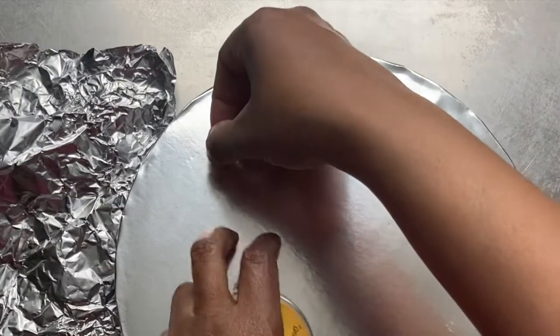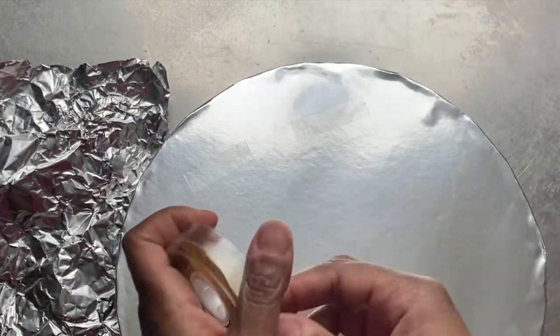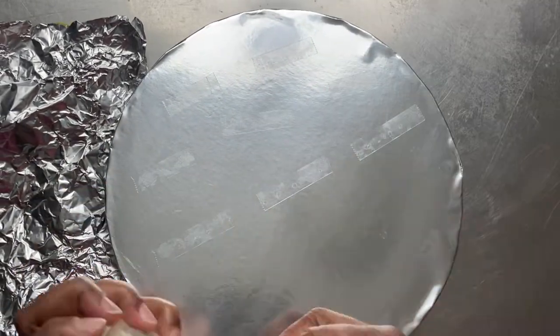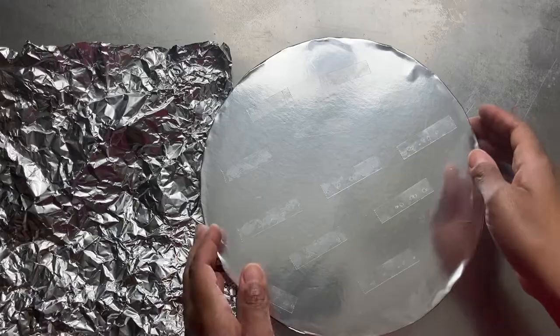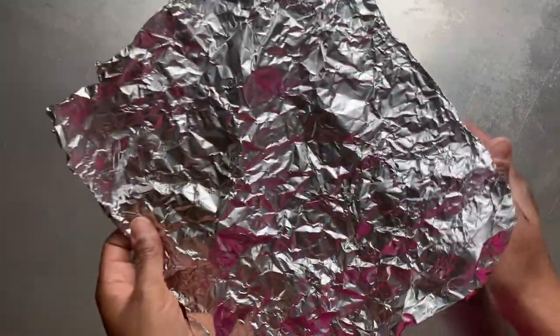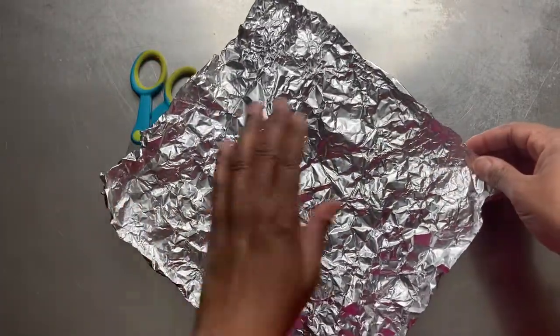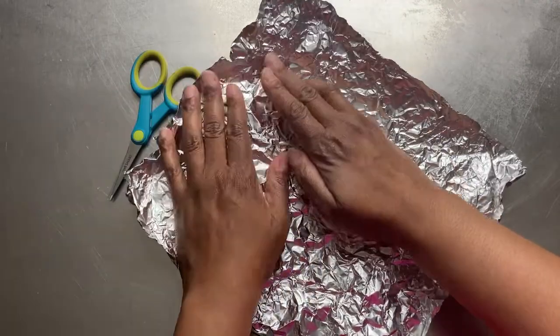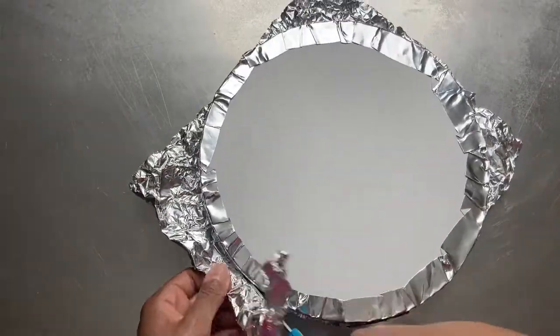Next, I apply double-sided tape to the top of the cake base. Then I gently press the aluminum foil to the top of my cake base. Flip it over and cut the excess aluminum foil from the perimeter of the base.